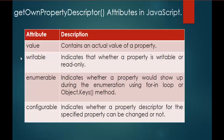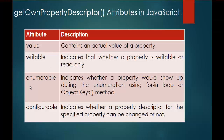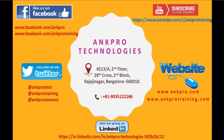This is the advantage of using Writable, Enumerable, and Configurable. For Configurable: if you want to restrict editing of the object's properties entirely, you have to set the Configurable value to false. By setting Configurable to false, you are restricting the end user from changing the values of the object's properties. That's what we learned in this session — the importance of Writable, Enumerable, and Configurable. Thank you for listening, have a great day. Please subscribe to our YouTube channel Angpro Training, like our Facebook page, follow us on Twitter, and visit our website. We are on LinkedIn too. Please don't forget to give feedback. Thank you.